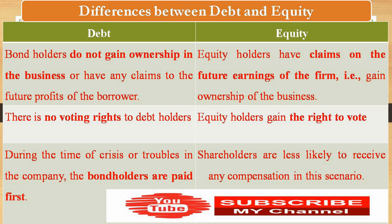During times of crisis or trouble in the company, bond holders and debt holders are paid first before other expenses are paid. If the company shuts down or faces crisis, debt holders get priority repayment. Shareholders are less likely to receive any compensation in this scenario, because they are actually the owners of the company and bear the residual risk.